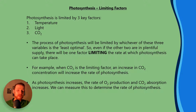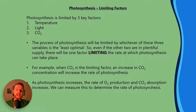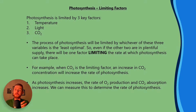As photosynthesis increases, the rate of oxygen production and CO2 absorption also increases, because oxygen is a product of photosynthesis and carbon dioxide is a substrate in photosynthesis. We can measure either oxygen production or CO2 absorption to give us an indication of the rate of photosynthesis.